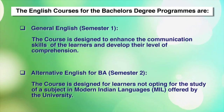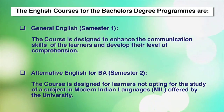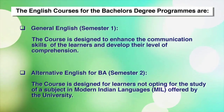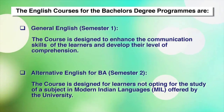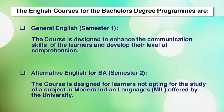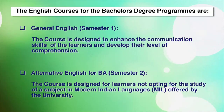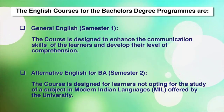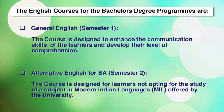For example, a learner who wants to opt for English major has to study English as an elective subject in the first and the second semester. Now, the English courses for the bachelor's degree programs are as follows. General English, which you will find in semester one, is designed to enhance the communication skills of the learners and to develop their level of comprehension.